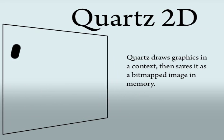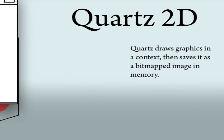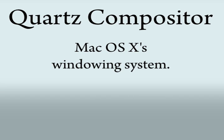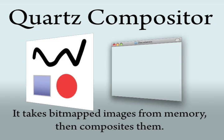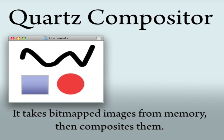On top of Darwin, we layer on something we are calling Quartz. Quartz is a whole new imaging model and windowing system for Mac OS 10. We wanted a windowing system and graphics model based on the latest and greatest stuff — and that is the PDF standard invented by Adobe. We believe in that standard, we are embracing that standard, and we are building it into Mac OS 10.